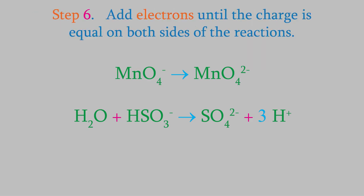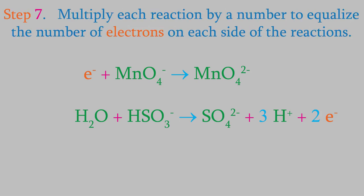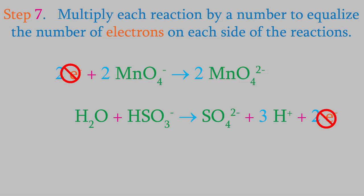Finally, in step 6, we'll add the electrons to balance the charges. In the reduction reaction, there's a charge of minus 1 on the left and minus 2 on the right, so we need to add 1 electron on the left side. In the oxidation reaction, the charge is minus 1 on the left and plus 1 on the right, so we need to add 2 electrons on the right side. For our last step, we need to make the electrons cancel out, so we'll multiply the reduction reaction by 2. That way, there are 2 electrons in each reaction, and these will cancel out.